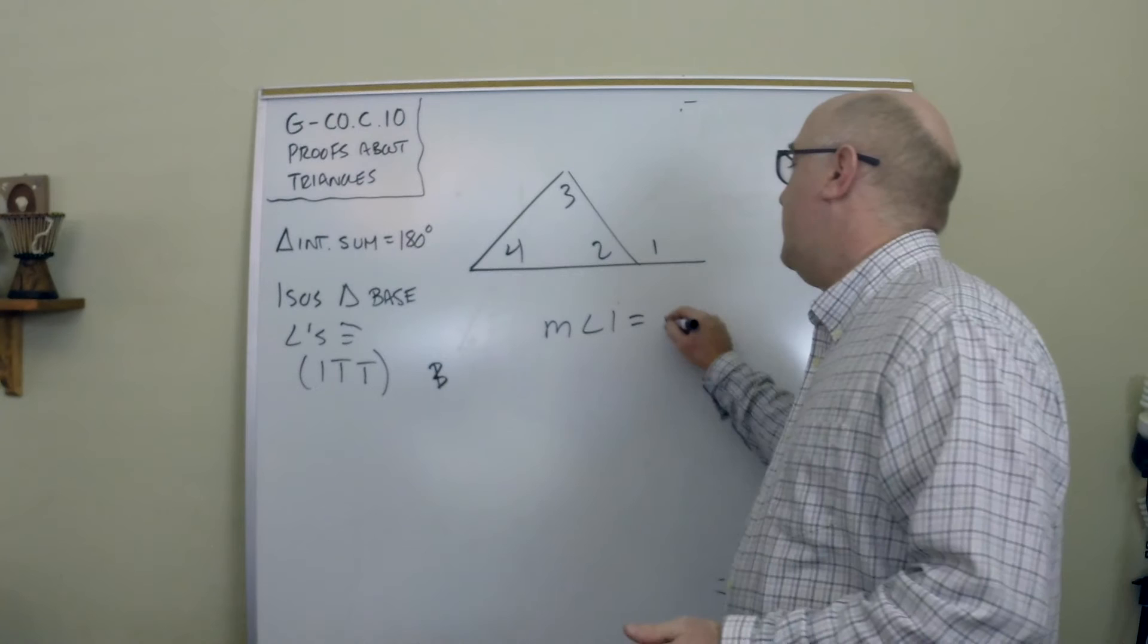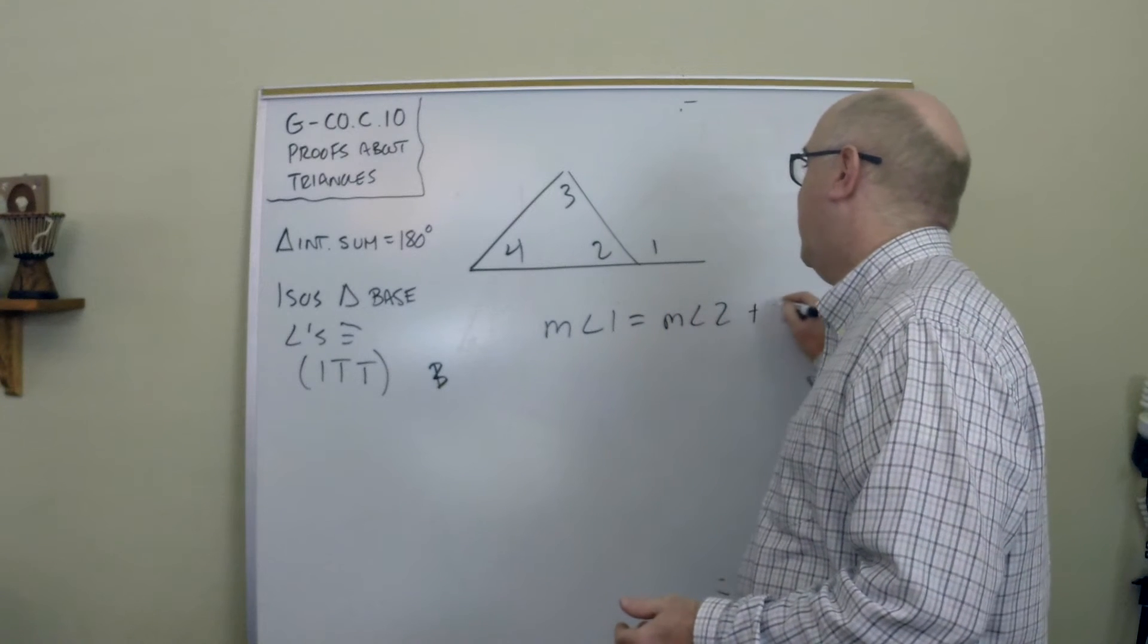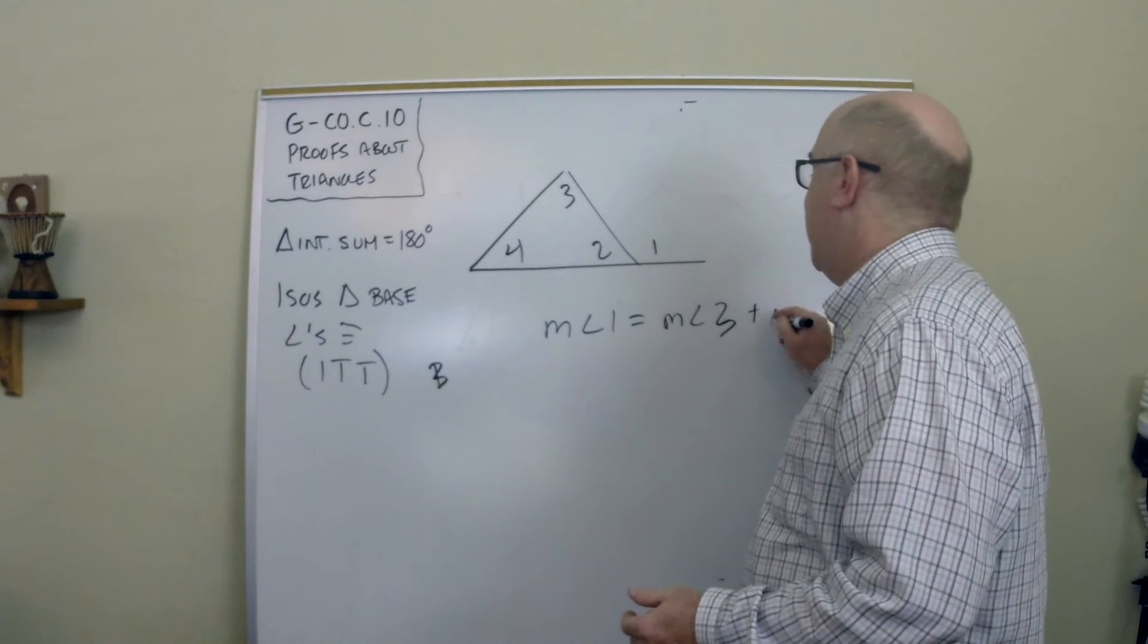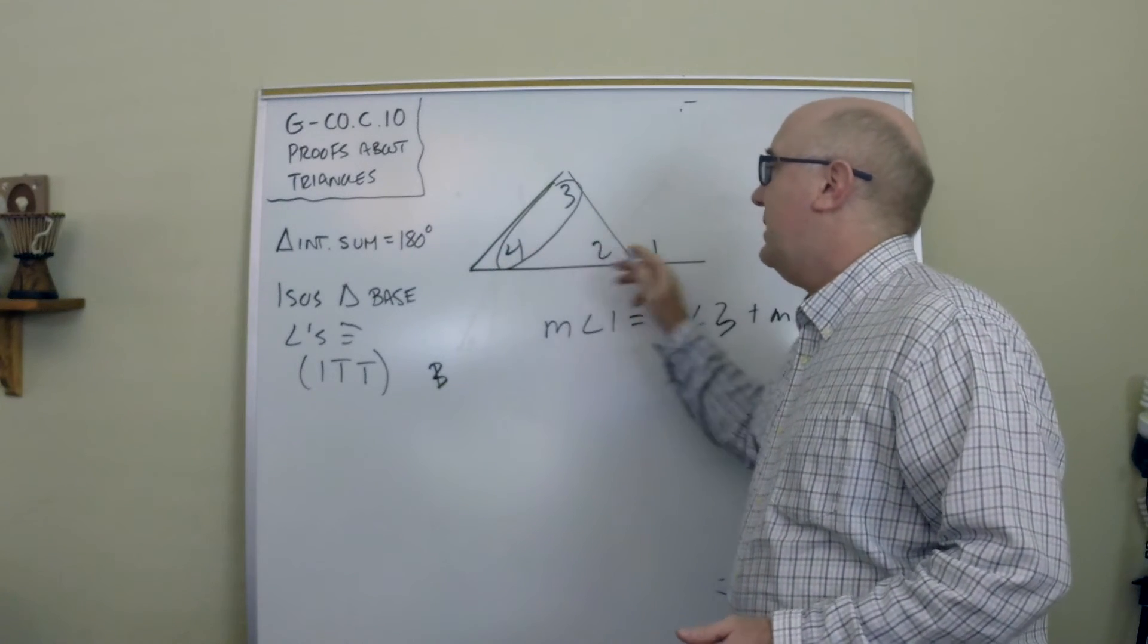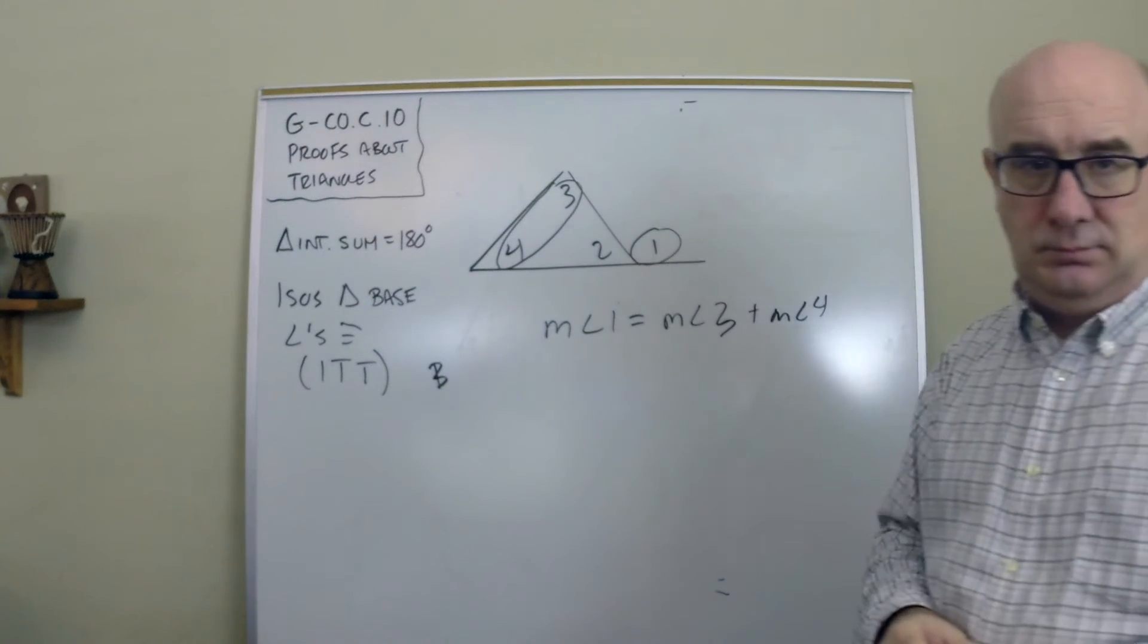And it just says the measure of angle 1, the exterior angle, is equal to the measure of angle 3 and 4. That these two guys are equal to this.